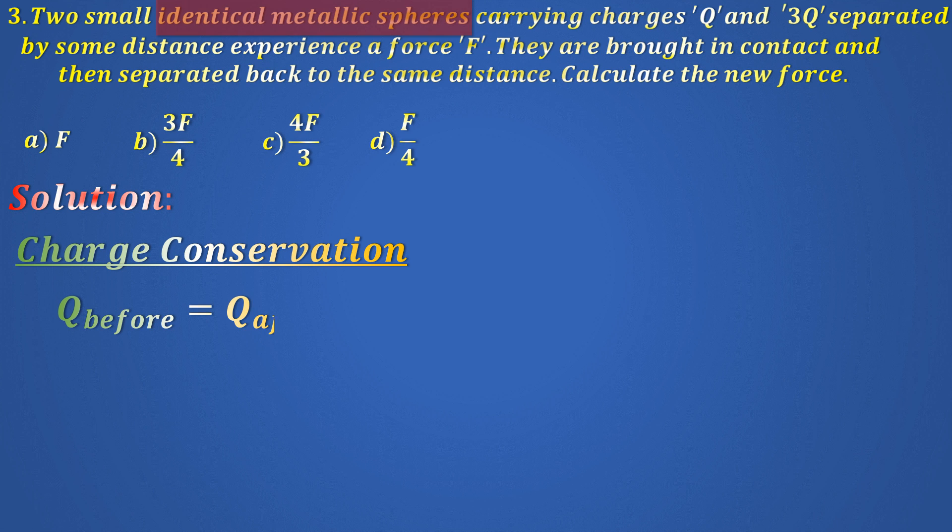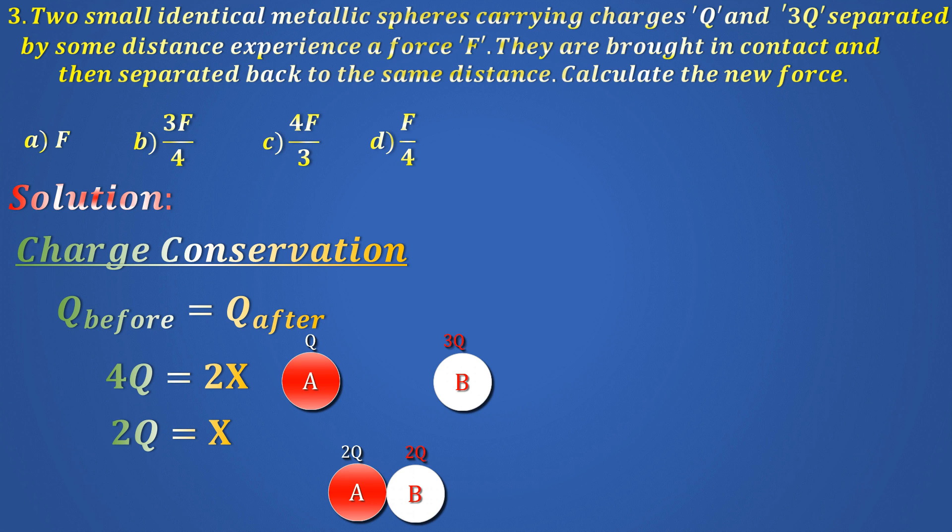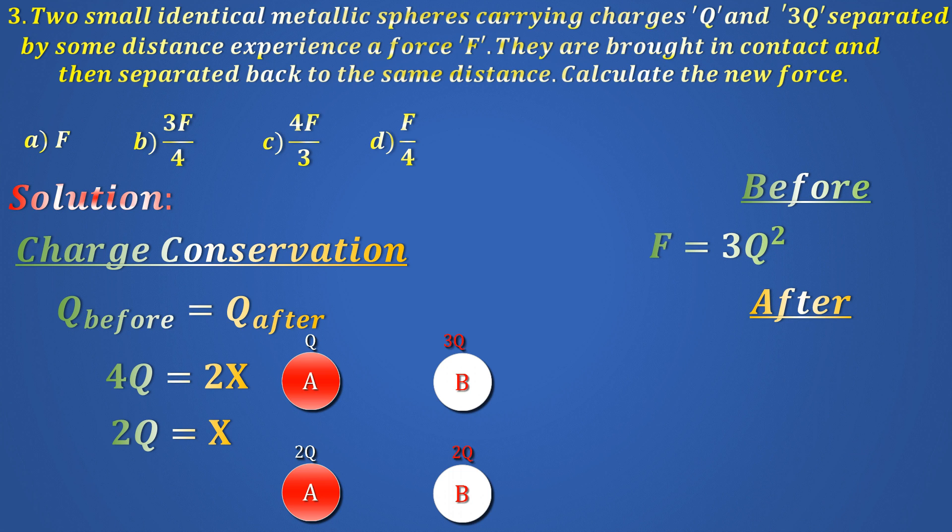The total charge before and after must be the same. The total charge before being in contact is Q plus 3Q, which is 4Q. After conduction, both spheres get equal charge. Let's call it as X and X. So, after conduction, the total charge becomes 2X. Therefore, from charge conservation, 4Q equals 2X, making X equals 2Q. Now, all we have to do is calculate the ratio before and after conduction. Before, F equals Q times 3Q, which is equal to 3Q squared. Afterwards, F dash equals 2Q times 2Q, which is 4Q squared. Divide by 3 and multiply by 3, so that this can be called as F, making F dash equals 4 by 3F. You return.